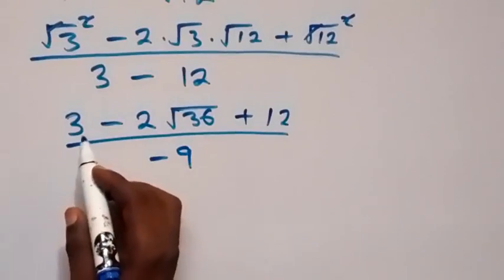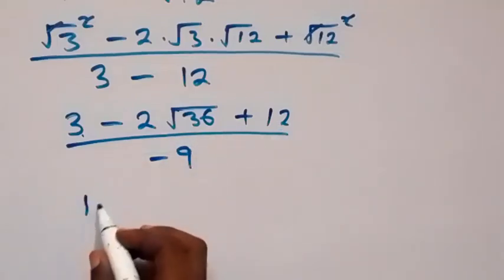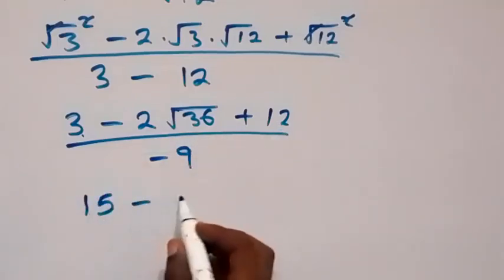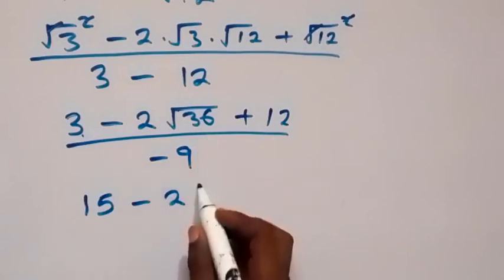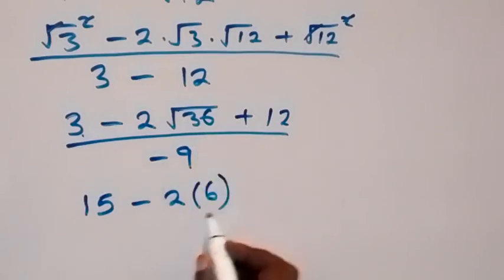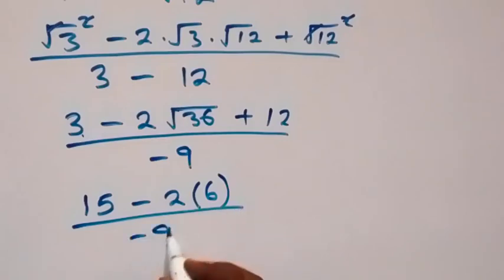We have 3 plus 12 here, that is 15, then minus 2, root 36 here is 6, then over minus 9.